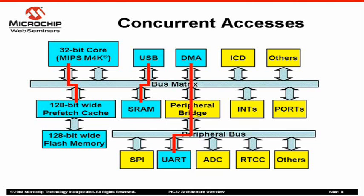The exact priority is determined by the programming of bus matrix registers. The software may give highest priority to the CPU, DMA, or USB. In addition, the software may select one of three different arbitration schemes: Fixed priority, Fixed priority with CPU at lowest priority, and Rotating priority scheme. Depending on the system requirements, an application would select an appropriate arbitration scheme to achieve the required data throughput and timings.